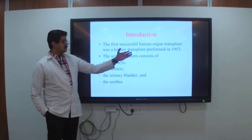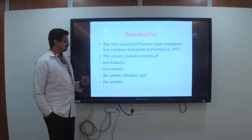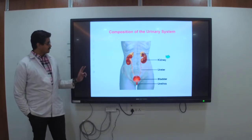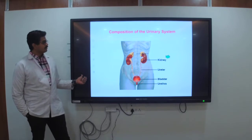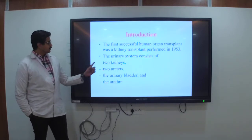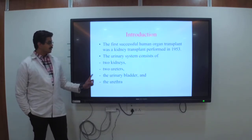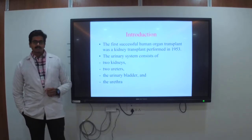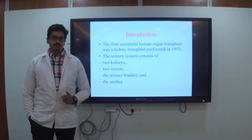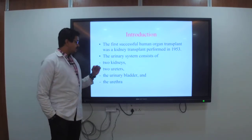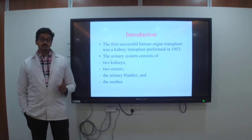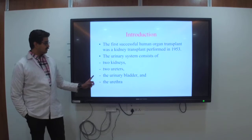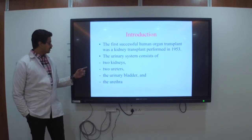The urinary system consists of two kidneys, two ureters, the urinary bladder, and the urethra. In some textbooks it will be written as one pair of kidneys. Make note of that — two kidneys, two ureters, one urinary bladder, and one urethra.